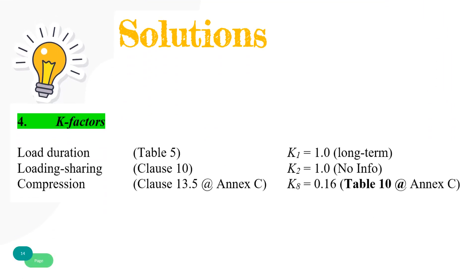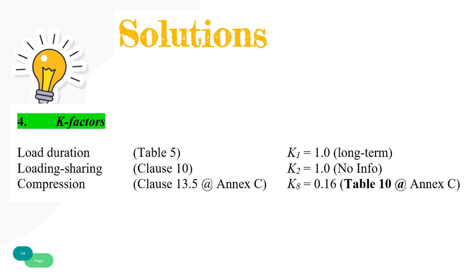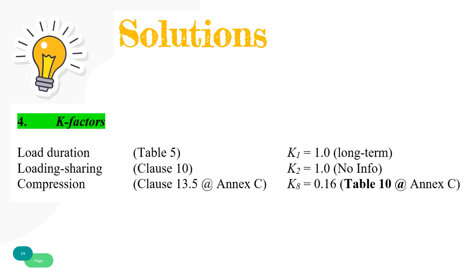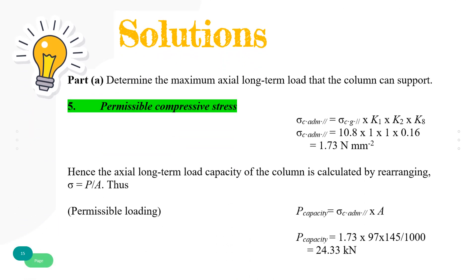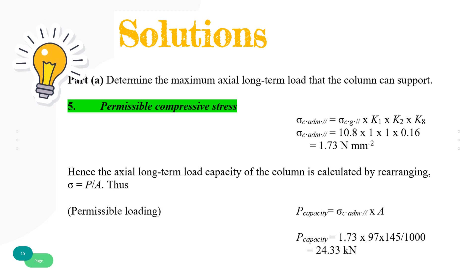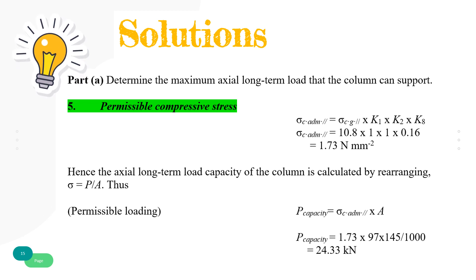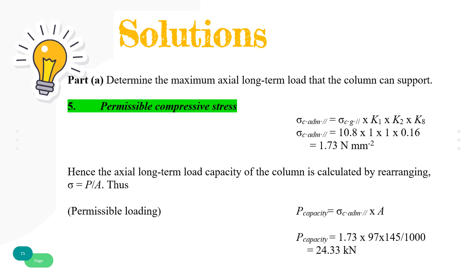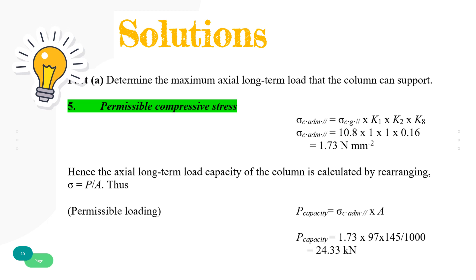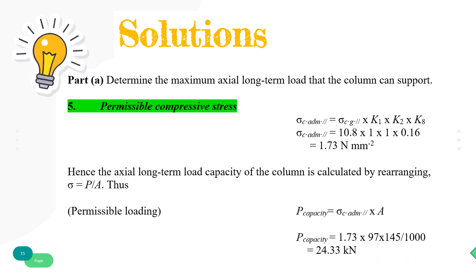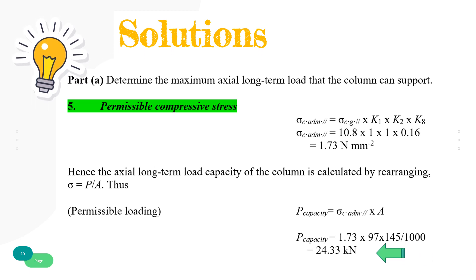Now we have all modification factors — K1, K2, and K8 — for the given situations. Part A: Determine the maximum axial long-term load that the column can support. The permissible compressive stress is determined by multiplying grade stress by all modification factors, giving 1.73 N/mm². Hence, the axial long-term load capacity of the column is calculated by rearranging the stress formula P over A. The maximum axial long-term load that the column can support is 24.33 kN.